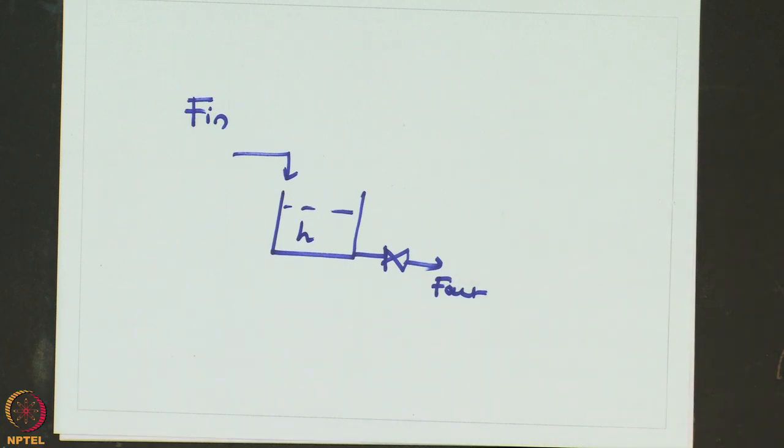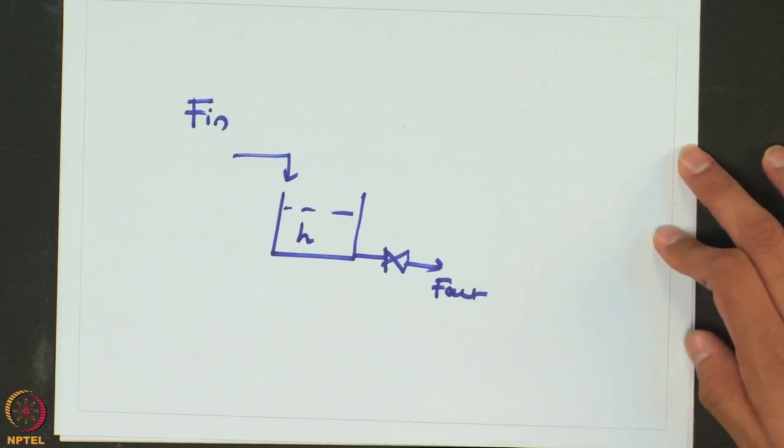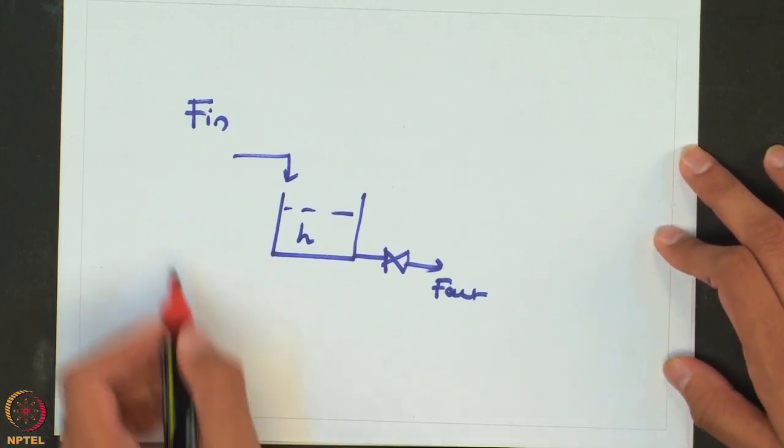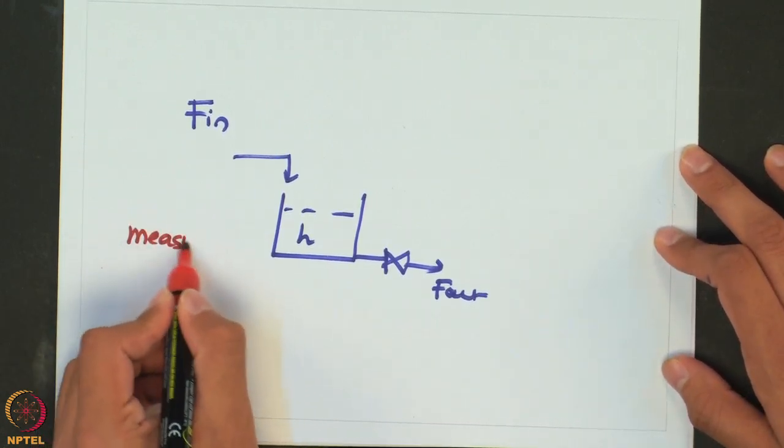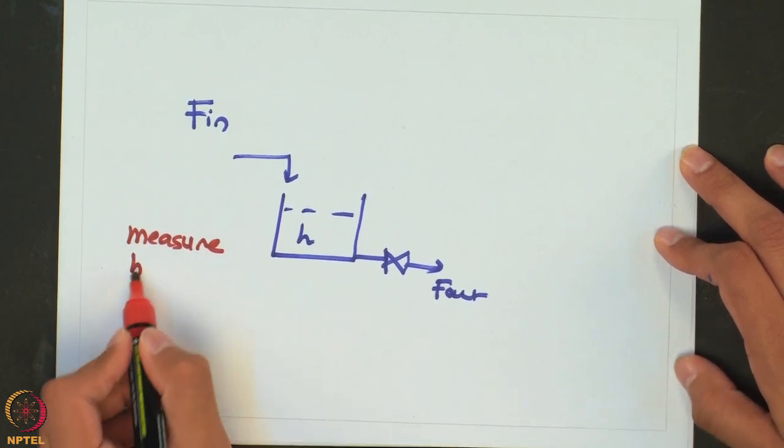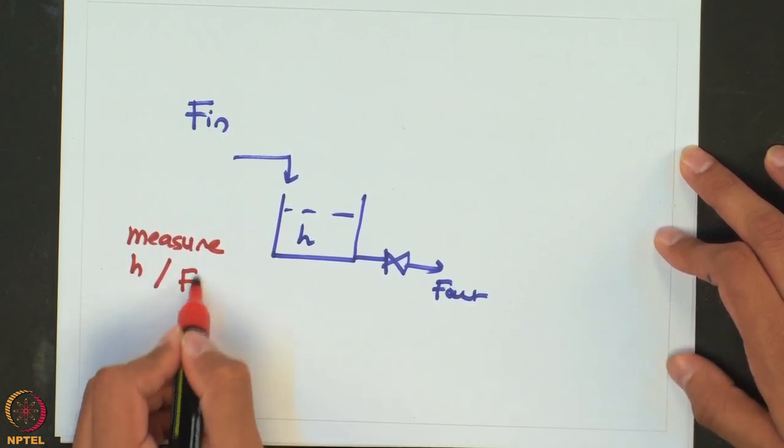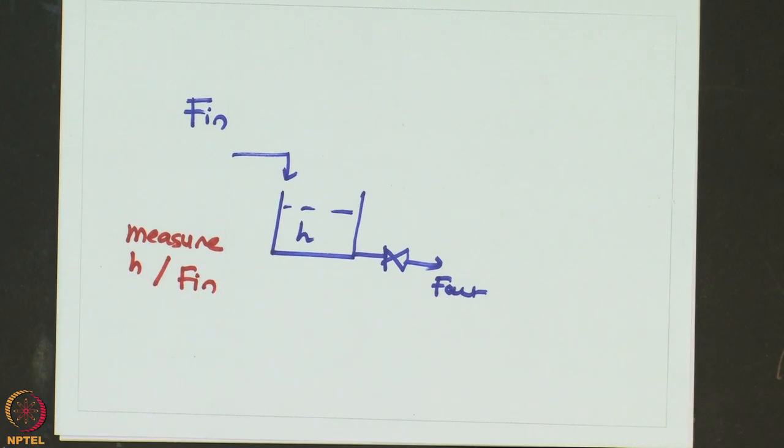This is our system where we want to control the level or height inside this tank. The first and foremost what we need in order to take any control action is to measure either the height or the inlet flow rate, either the control variable or the disturbance.